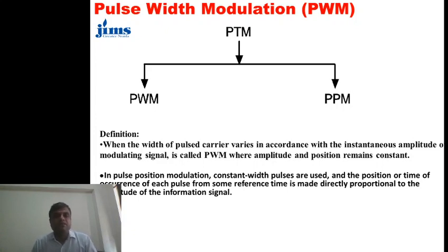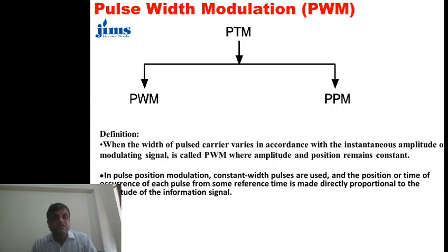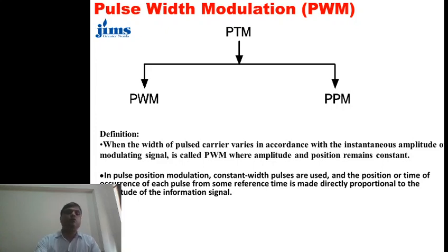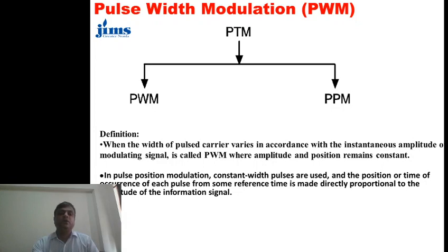In any pulse, the amplitude, position, and width are three parameters used to characterize or draw a pulse. If the width is varied while all other parameters are constant, it is pulse width modulation. If the position is varied with respect to some reference point — since once we vary the position we require a reference point — we can identify the position of different pulses, and that is called pulse position modulation.